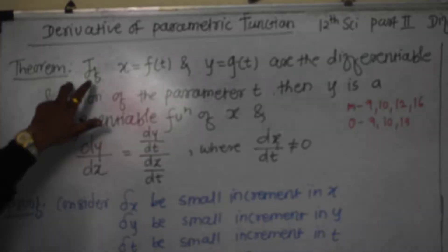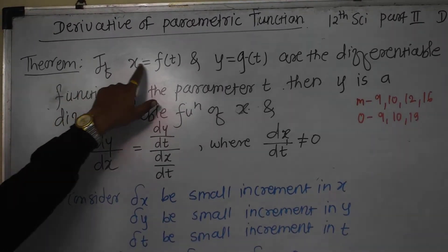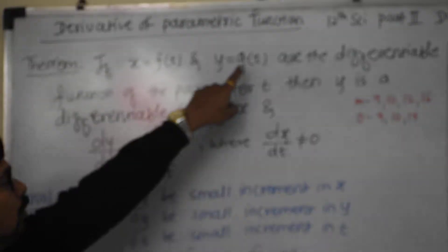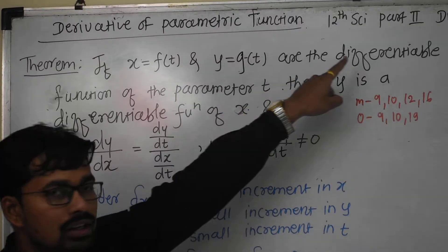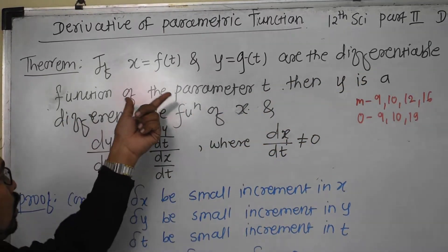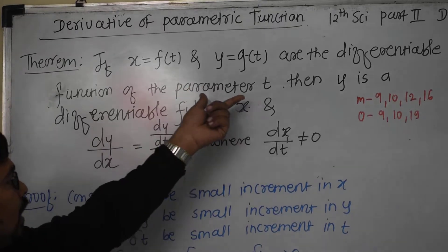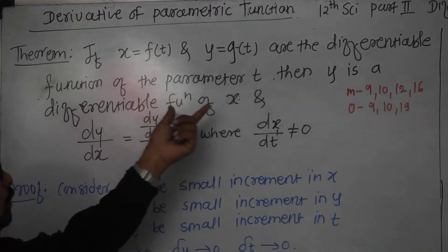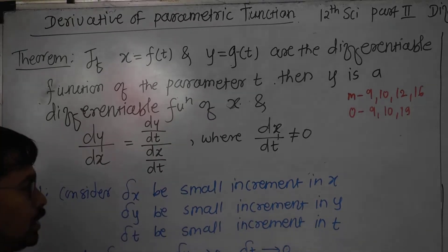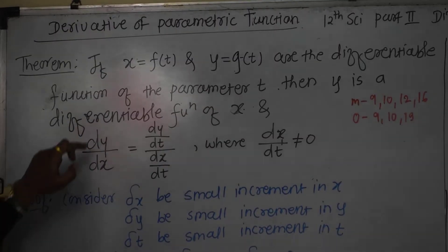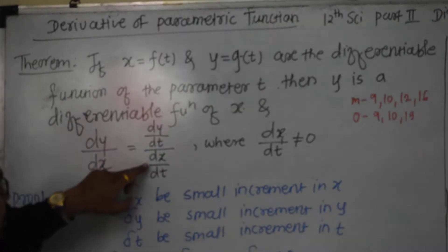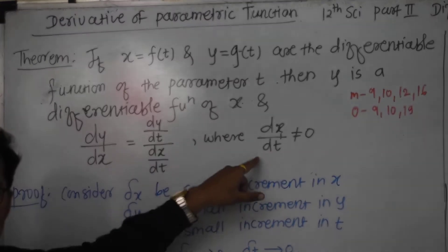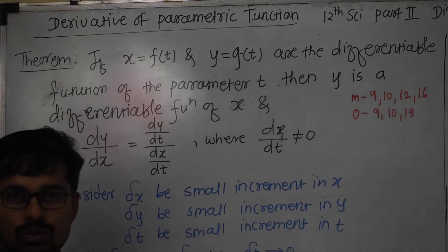The statement is: if x = f(t) and y = g(t) are differentiable functions of the parameter t, then y is a differentiable function of x and dy/dx is equal to (dy/dt) divided by (dx/dt), where dx/dt is not equal to zero. That is the statement of the theorem.